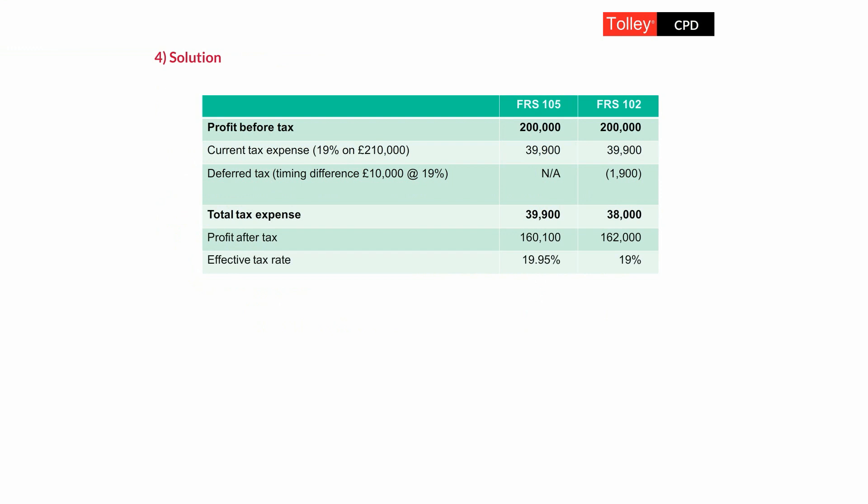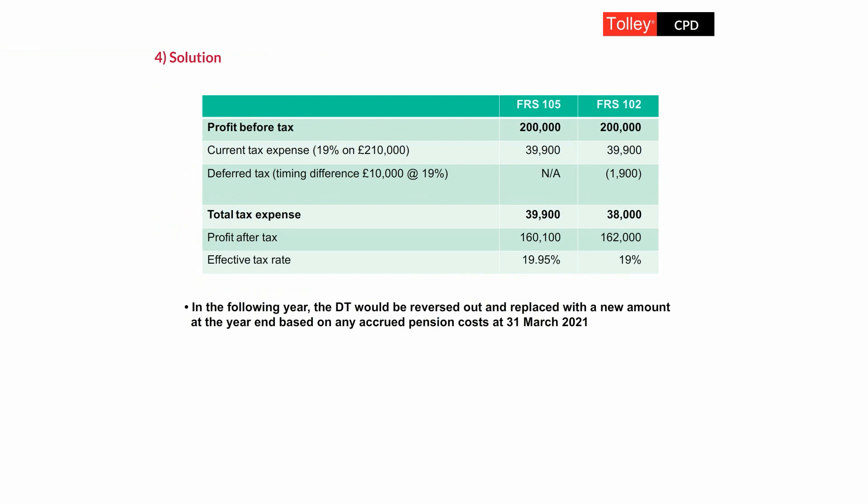Working out the effective tax rate — taking the total tax expense as a percentage of the accounting profit before tax — we get 19.95% under FRS 105, even though the actual tax rate is 19%. Under FRS 102, by booking deferred tax, we end up with an effective tax rate of exactly 19%. Next year, the deferred tax will be reversed out as the expense becomes allowable for real tax purposes. In this example, the profit after tax is higher under FRS 102, meaning FRS 105 would give a smaller distributable profit and a smaller justifiable dividend.